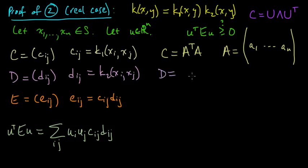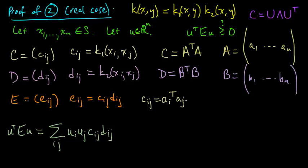And we can do the same thing for D. Let's call its factors B transpose B. And let's write the columns of B in this way. So then the entry C_ij is going to be, so let's write down here, what is C_ij?